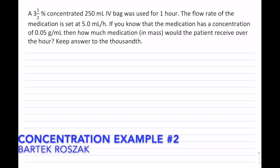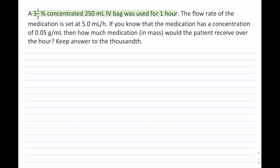A 3.5% concentrated 250 mL IV bag was used for 1 hour. The flow rate of the medication is set at 5 mL per hour. If you know that the medication has a concentration of 0.05 grams per mL, then how much medication in mass would the patient receive over the 1 hour? Keep answer to the thousandth.